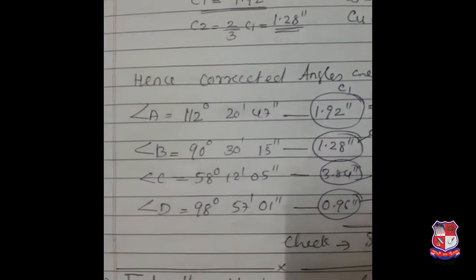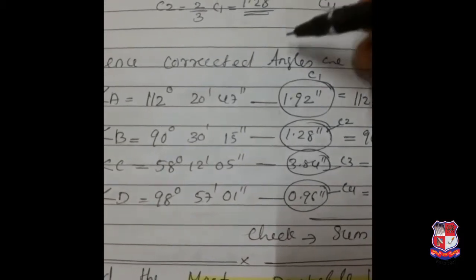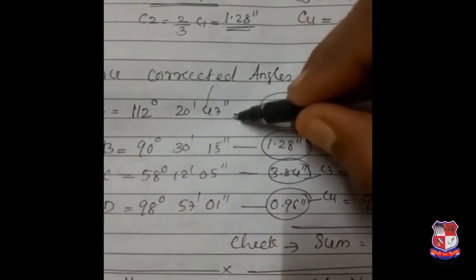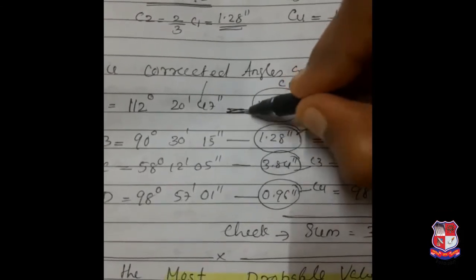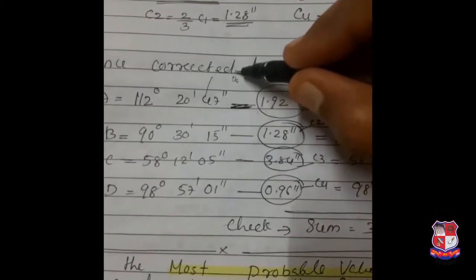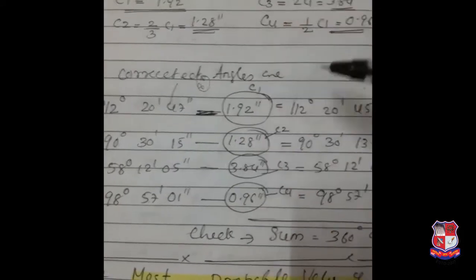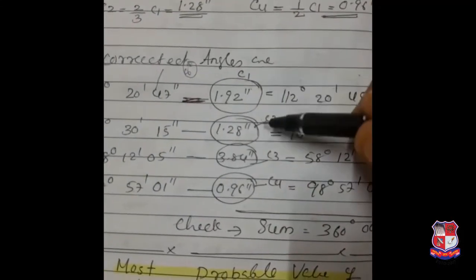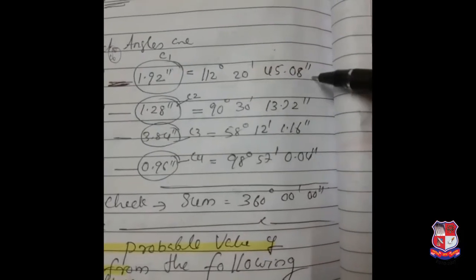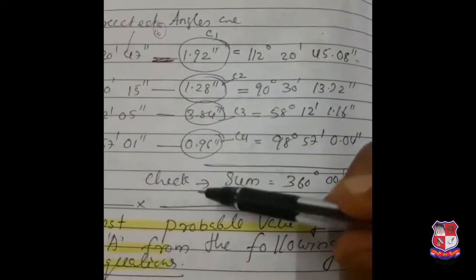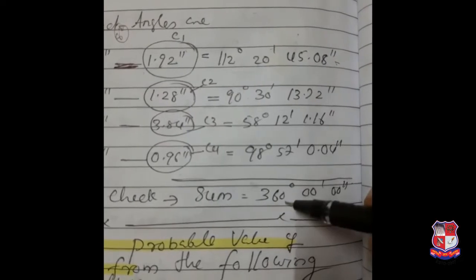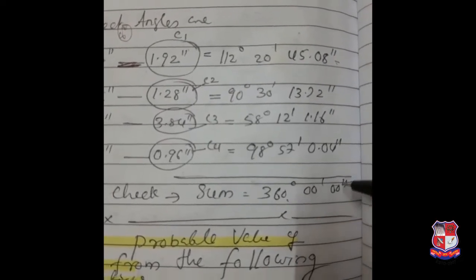Then the corrected angles equal the given values minus the corrections — why minus? Because 8 seconds was extra, so we have to subtract the corrections C1, C2, C3, and C4. These are the final corrected angles. As a check, you can add them and prove it comes exactly to 360 degrees.